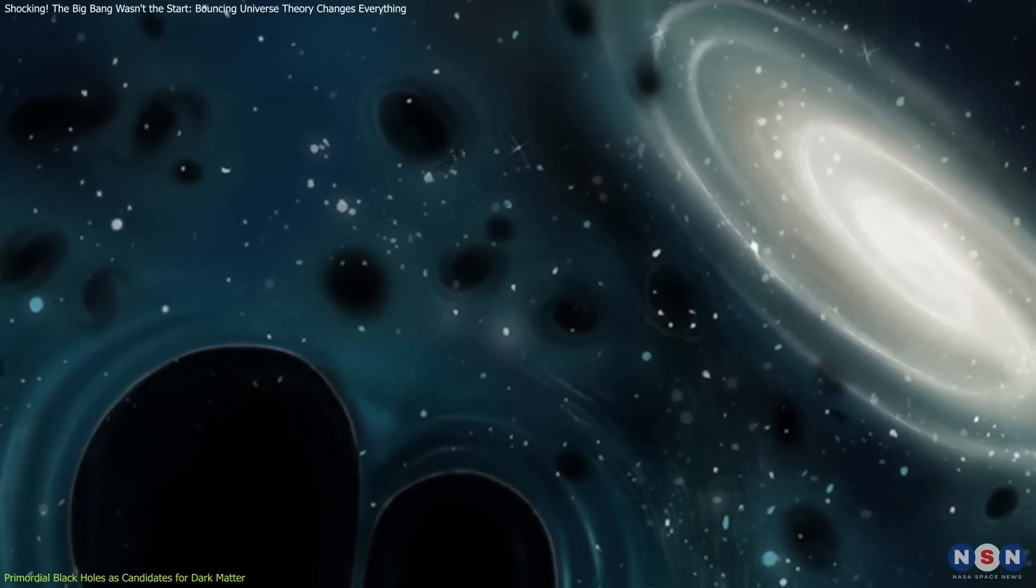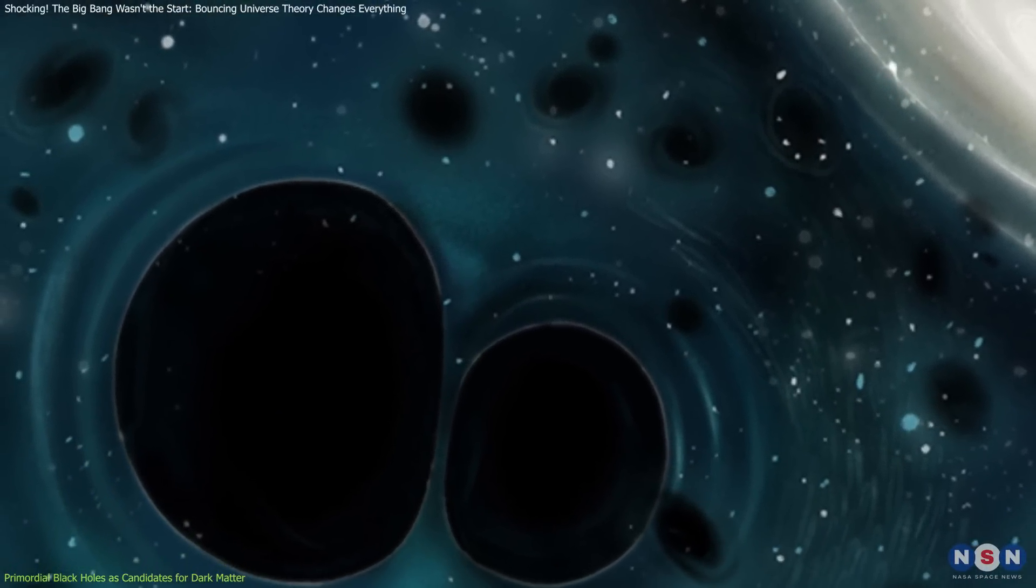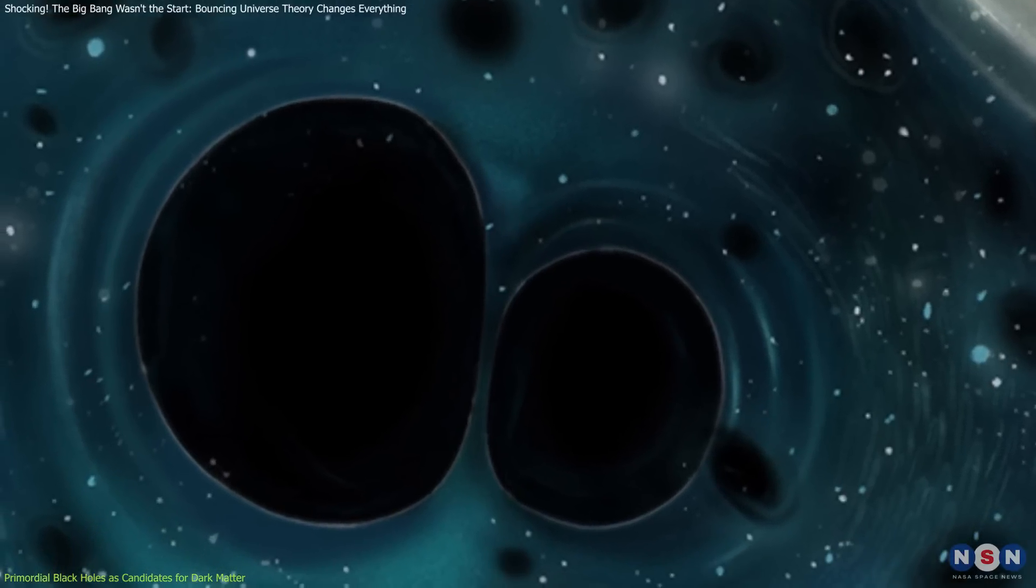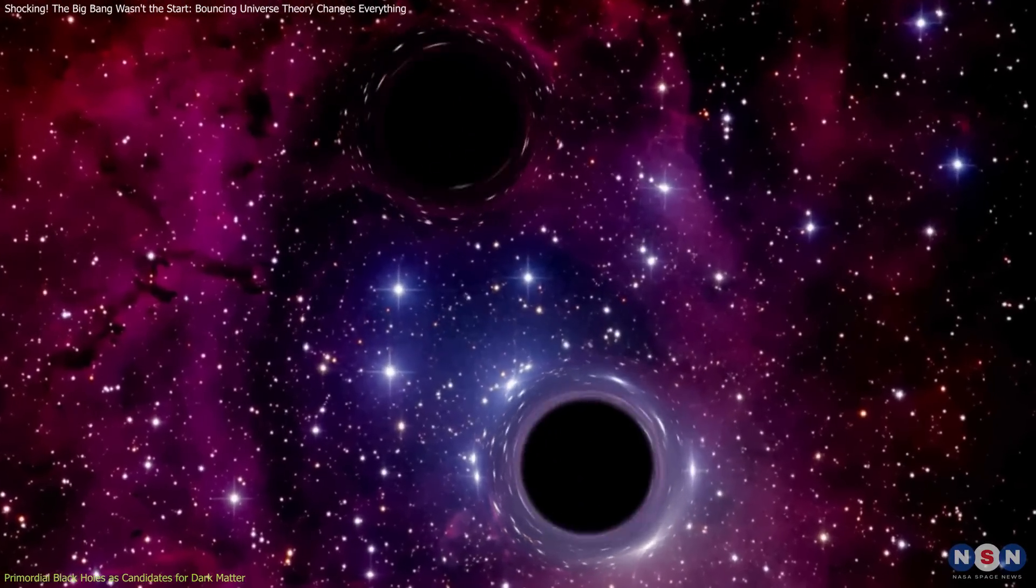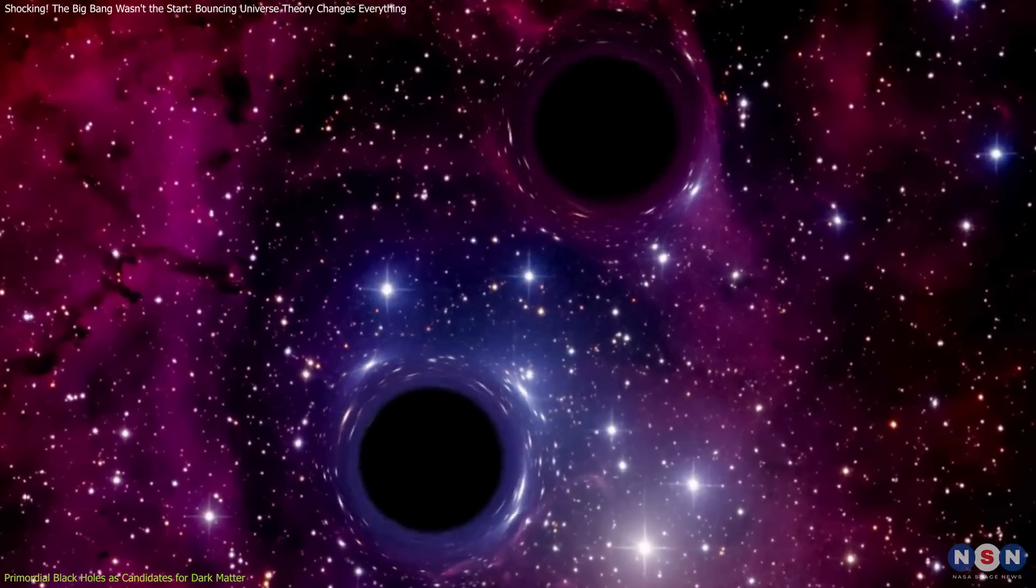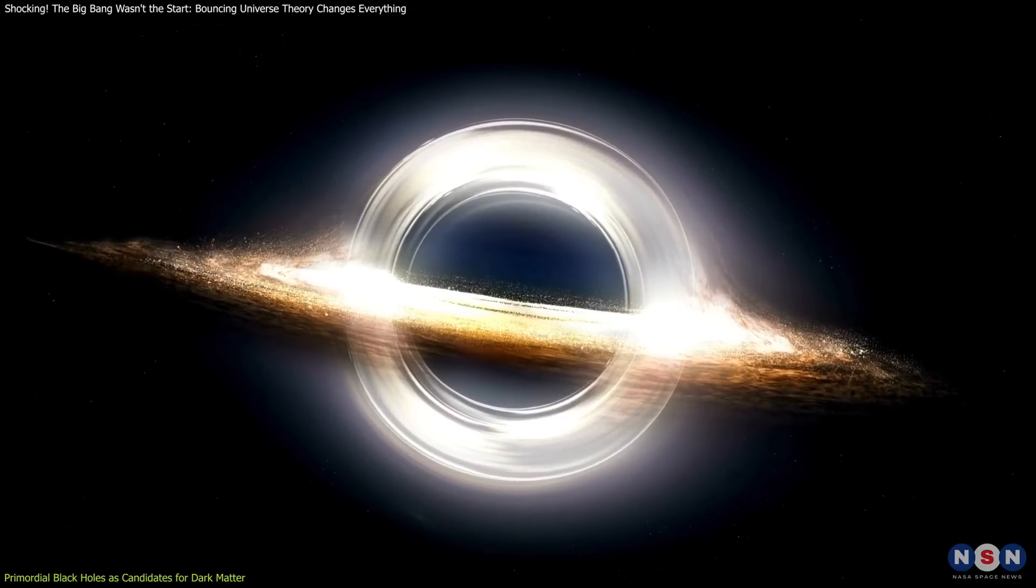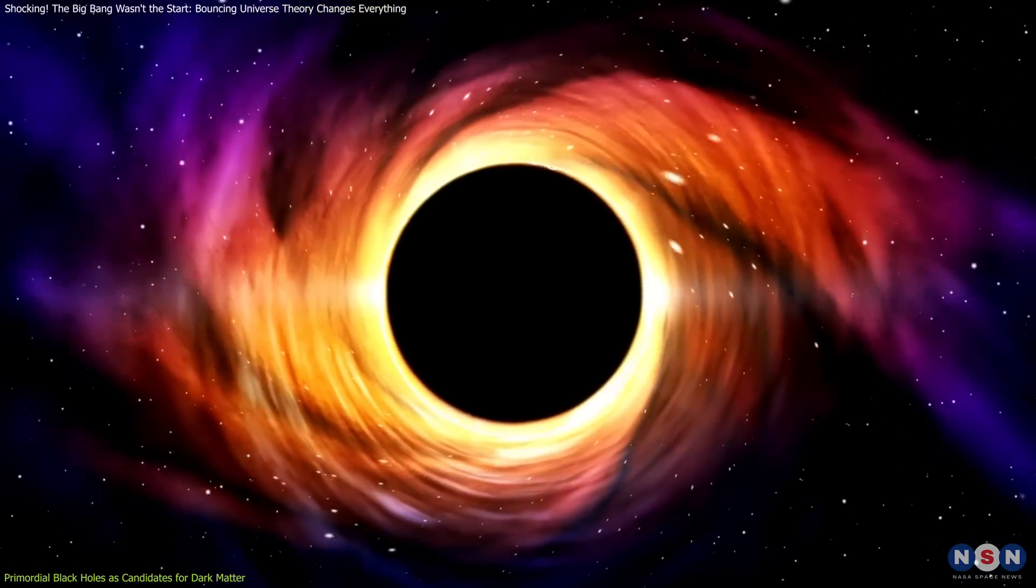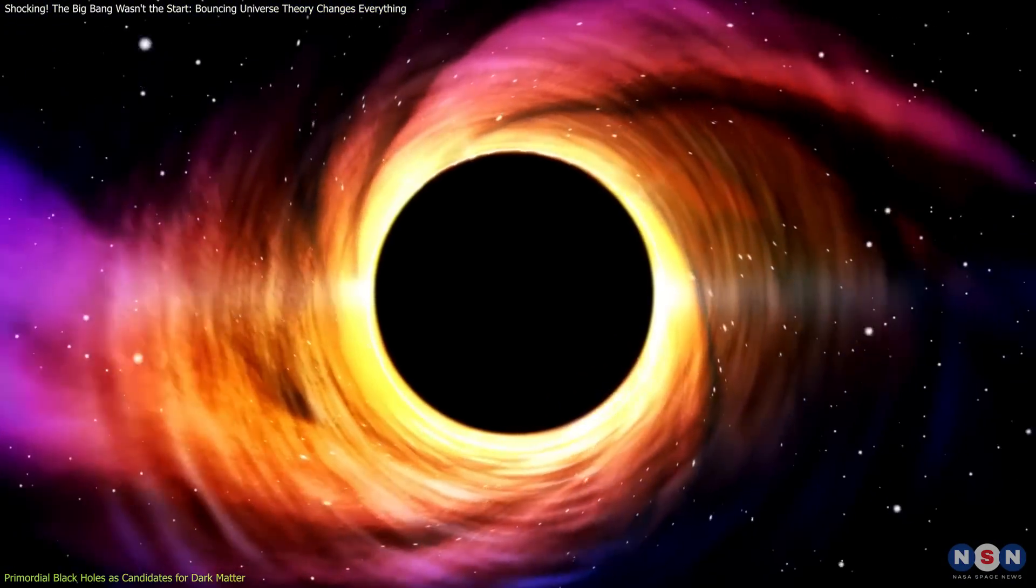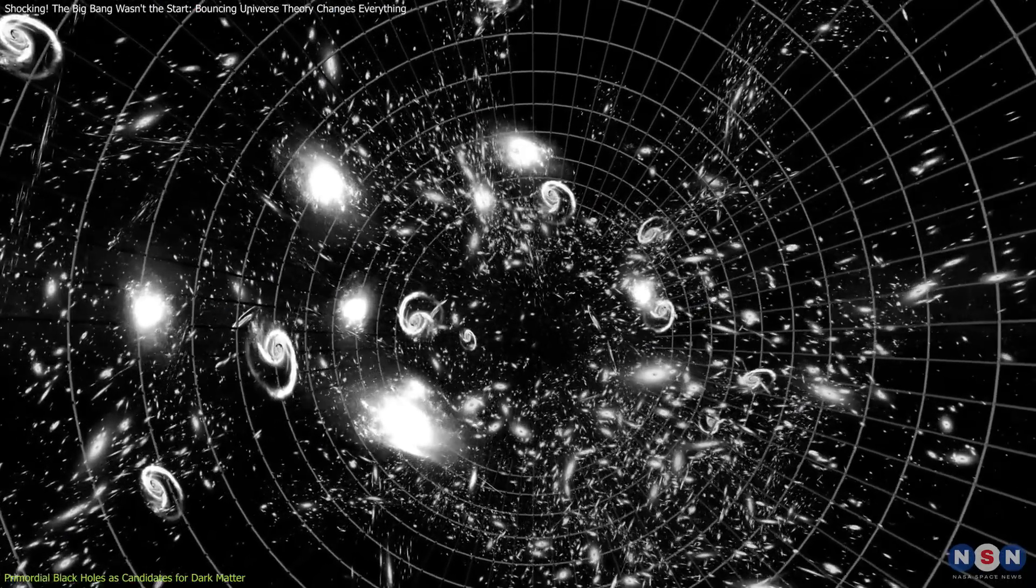These black holes could have a wide range of masses, from tiny subatomic sizes to several times the mass of the sun. What makes them particularly intriguing as dark matter candidates is their potential stability. If these primordial black holes exceed a certain mass threshold, they could survive the effects of Hawking radiation and persist to the present day, producing the gravitational effects observed in galaxies and galaxy clusters.